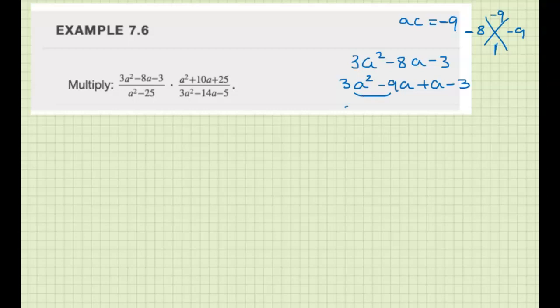Group these, factor out 3a, and we get a minus 3. Group these, nothing to factor, but factor out 1 times a minus 3, and then the a minus 3 is the common factor, times 3a plus 1. So here we have a minus 3 and 3a plus 1.